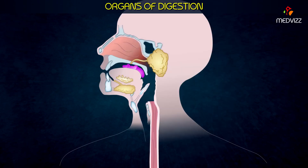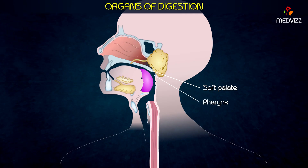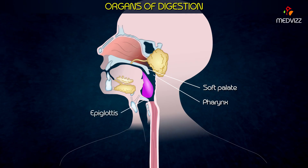As food is swallowed, the soft palate blocks the upper pharynx to prevent food from entering the nasal cavity, and multiple voluntary muscles in the face, neck, and tongue contract, pushing food particles through the pharynx. The food passes over the epiglottis, which prevents food entry into the respiratory system, and then into the esophagus, which connects the pharynx to the stomach.